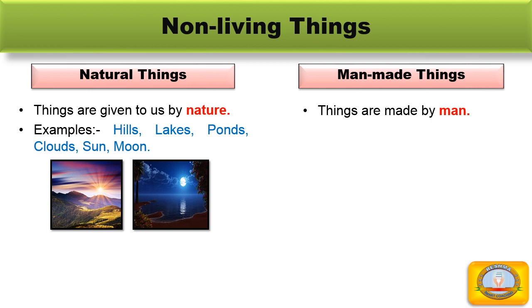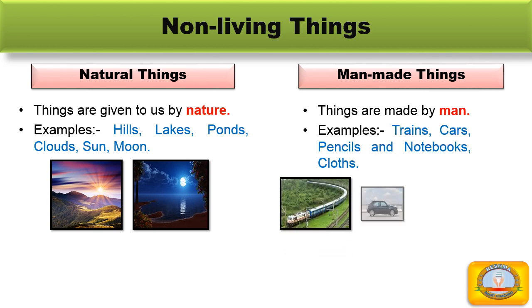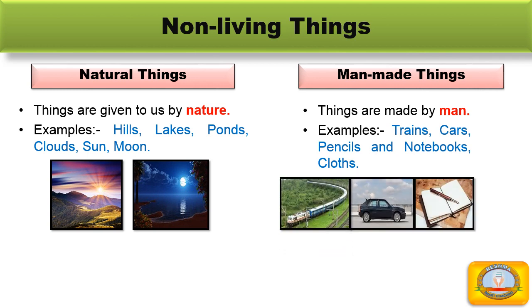Some things are made by man — they are called man-made things. Examples: trains, cars, pencils, notebooks, and clocks are man-made things.